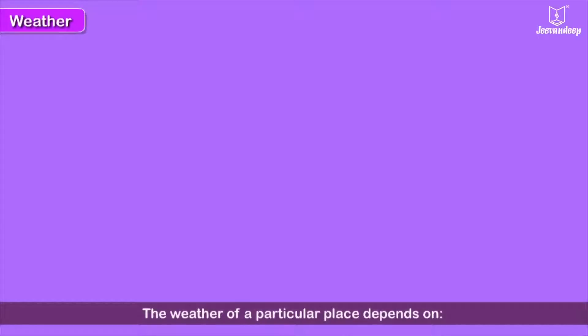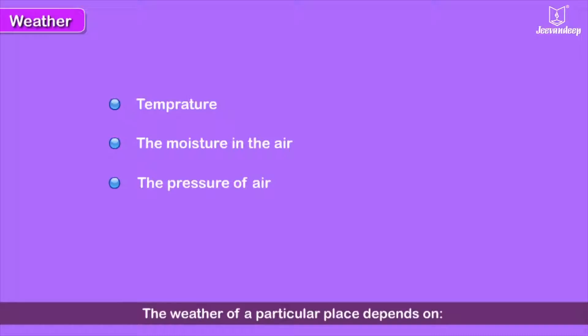The weather of a particular place depends on the temperature, the moisture in the air, the pressure of air, and the movement of air or wind.